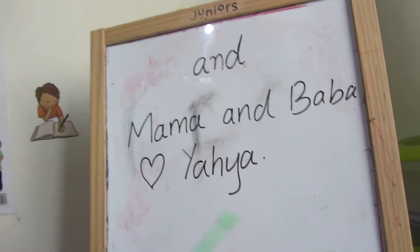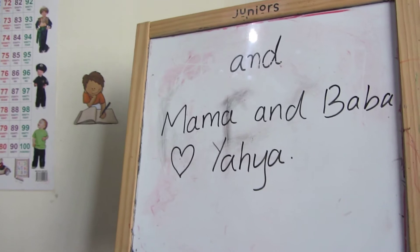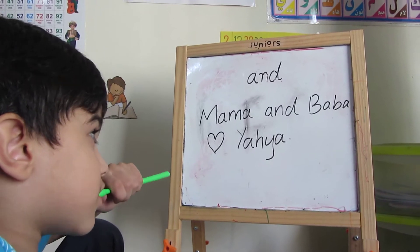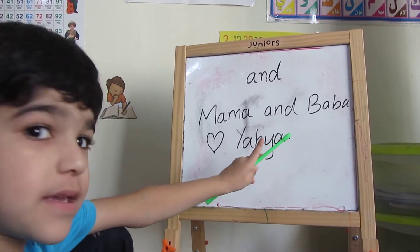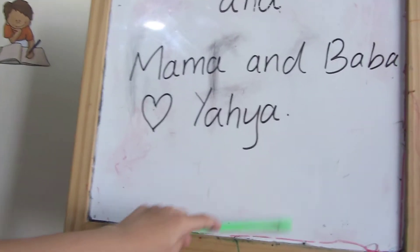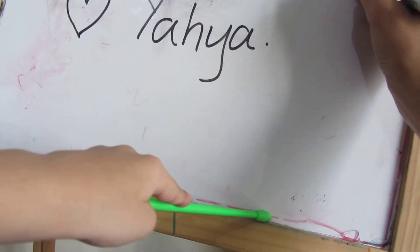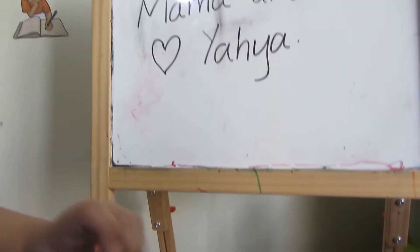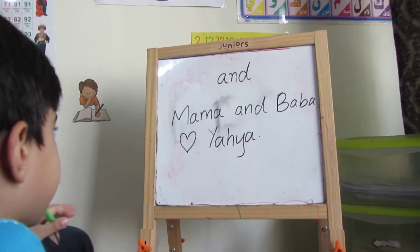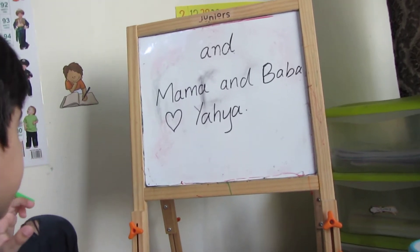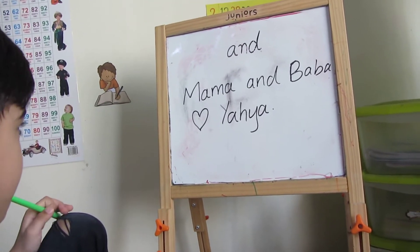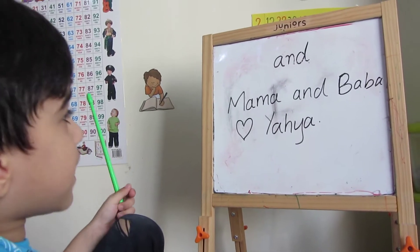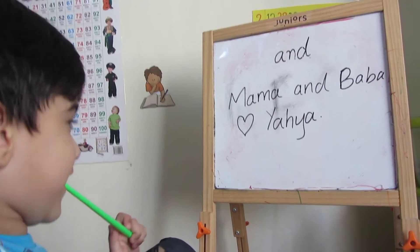Can you read the sentence now? Cat. And. Dog. Yes, good job! What did you say, Yaya? And. Can you find 'and' here? Point to it so people can also see it. Where is 'and'? Can you read the sentence? Mama and Baba. Next word? Yahya. Yes. What's the sentence? Say it fast. Mama and Baba and Yahya. Good job.